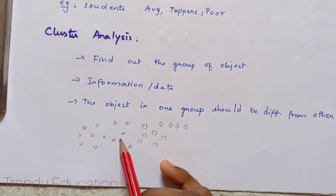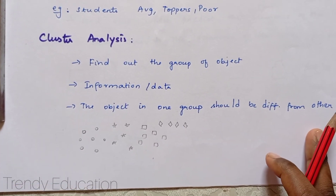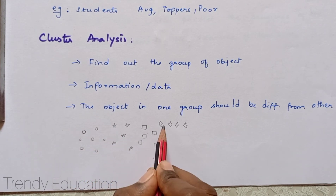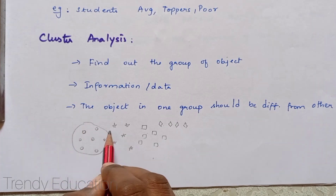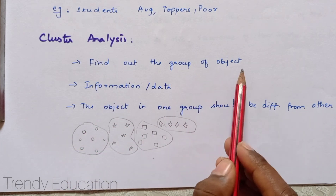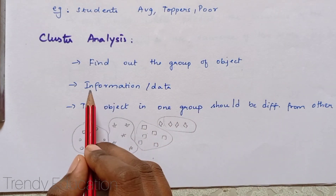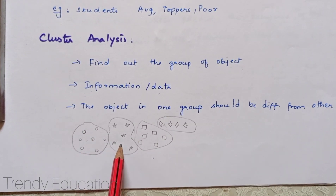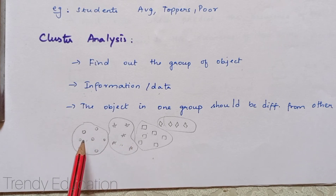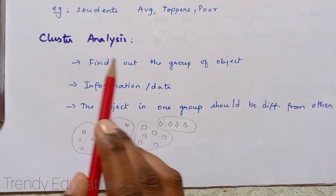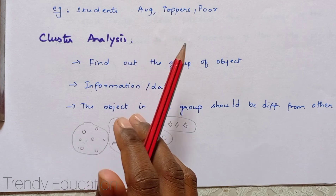Here you can see there are four types of objects: round shape, star shape, square shape, and diamond shape. I am clustering everything into separate groups. I found the groups from the information given, and the objects in one group are different from the other group. You can easily see that round is different from star shape, and star shape is different from square shape. This is what cluster analysis means.